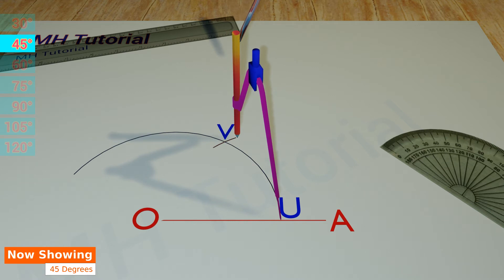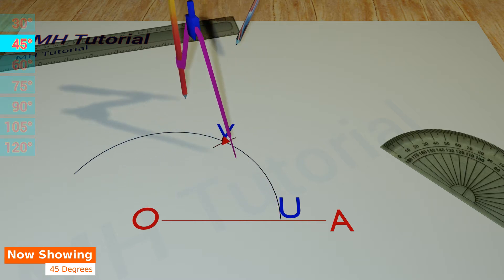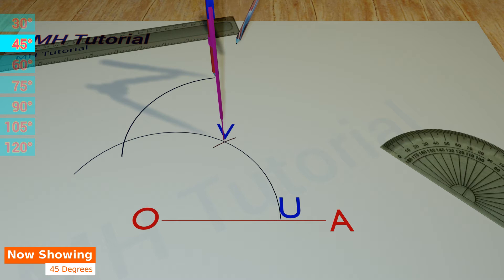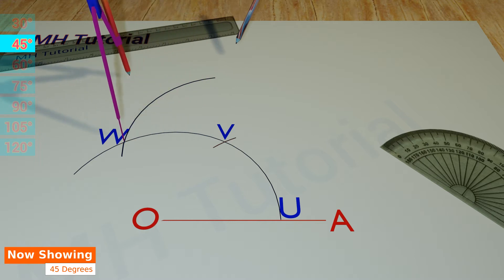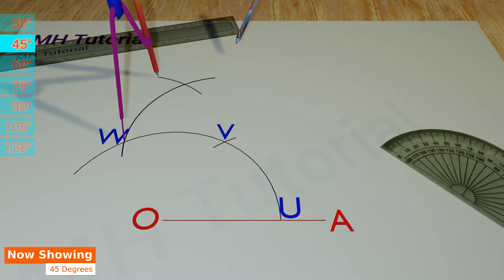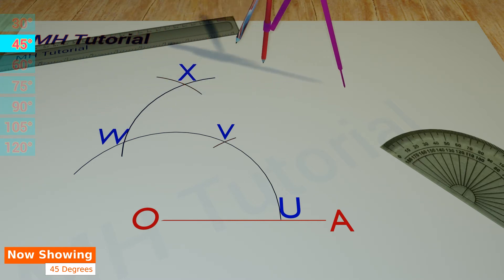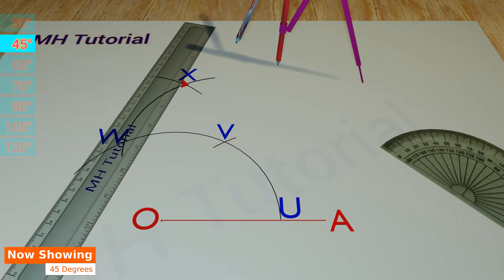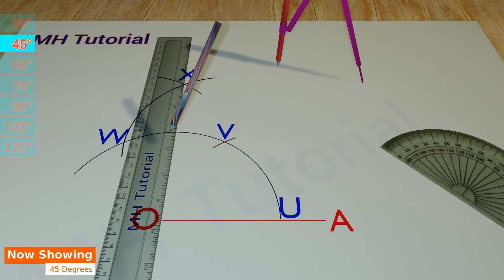This circle arc intersects the previous one at point B. Thereafter, point Y is made center to draw another circle arc of equal radius, this time slightly larger. Let this arc meet the first one at point W. Again, point W is taken as center of another circle arc to get an intersection against the third arc. This point of intersection is X. Then align the ruler about point O and point X, and a small line is drawn to get the point of intersection against the first circle arc.